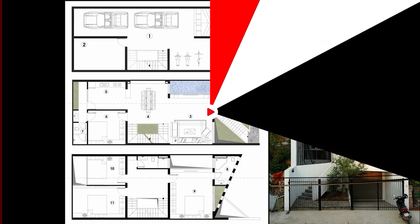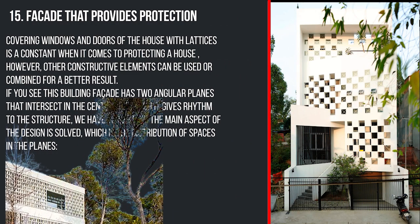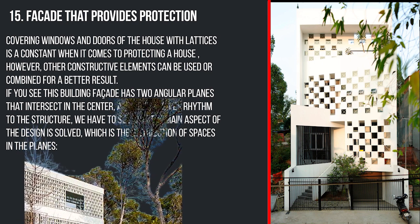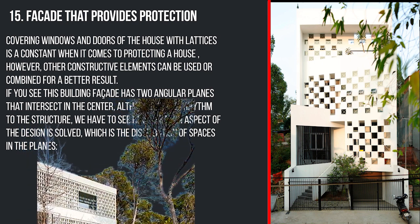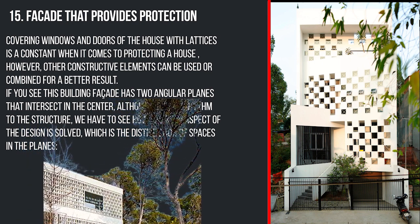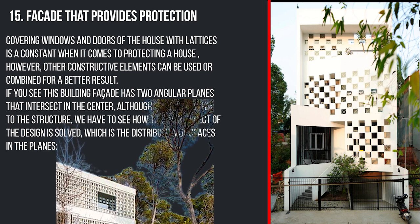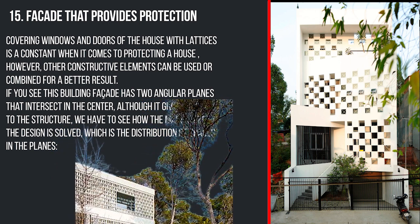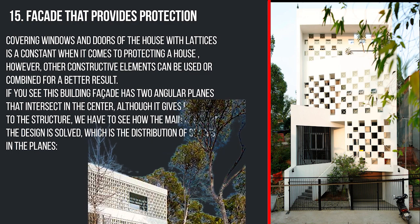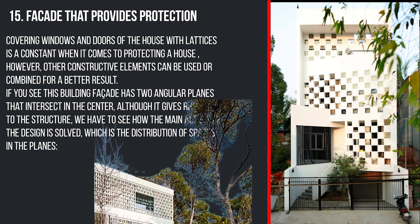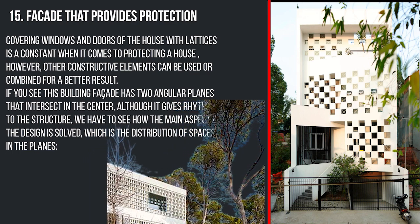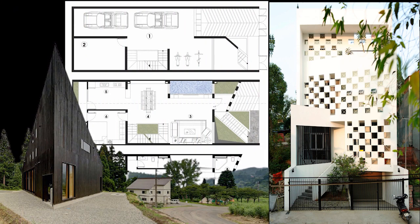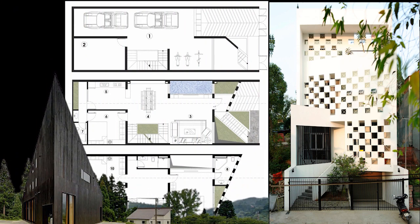The fifteenth and last type is facade that provides protection. Covering the windows and doors of the house with a lattice is a constant when it comes to protecting a house. Other constructive elements can be combined for a better result. For example, this building's facade has two angular planes that intersect in the center, which gives a rhythm to the structure, though the main aspects of the design must also be resolved.